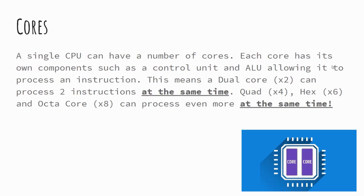Cores is an interesting one — it's the most common way for CPUs to speed up. Cores allow us to multitask and run multiple applications at the same time. In a dual core CPU, we have two sets of each of the CPU components. Thinking back to the von Neumann architecture — the MAR, MDR, program counter, and so on — a dual core processor has two sets of that setup, meaning it can perform two fetch, decode, execute cycles simultaneously. Quad core is four, hex is six, octa core is eight, and so forth. In an exam, using the term 'simultaneously' or 'at the same time' will get you the mark — it's the same principle.